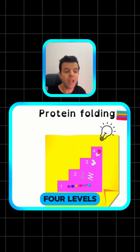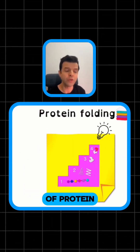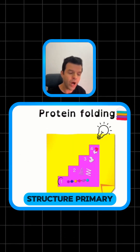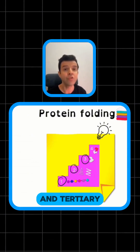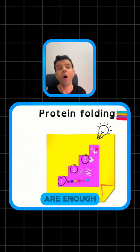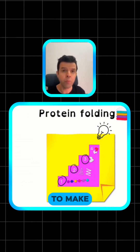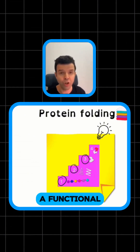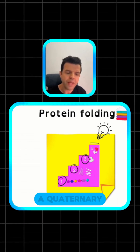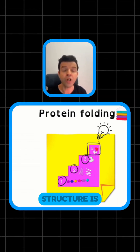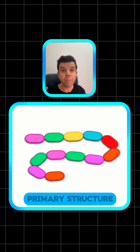There are four levels of protein structure: primary, secondary, and tertiary are enough to make a functional protein. For many proteins, a quaternary structure is also required.